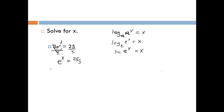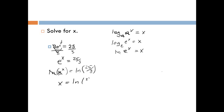Using our property, if we take the natural log of both sides of the equation — remember whatever you do to one side, you do to the other — we have the natural log of e to the x equals the natural log of 25 thirds. On the left side that cancels, so we're just left with x is equal to the natural log of 25 thirds.